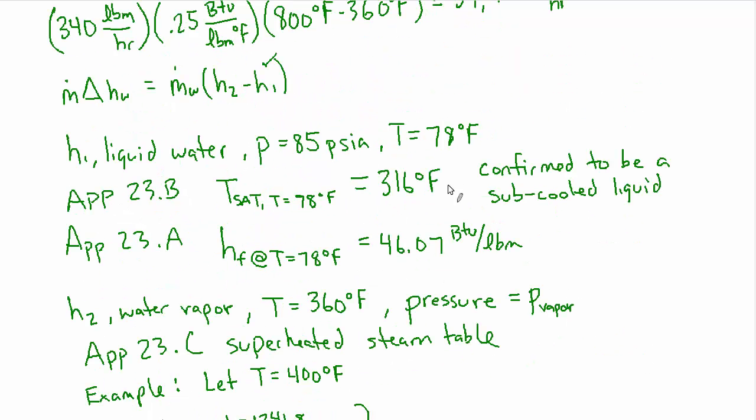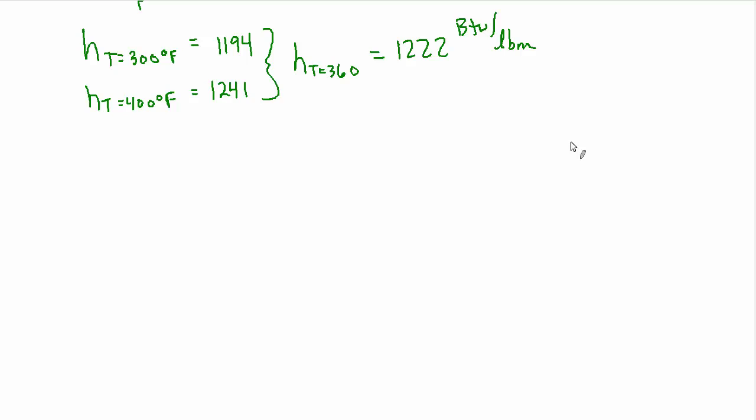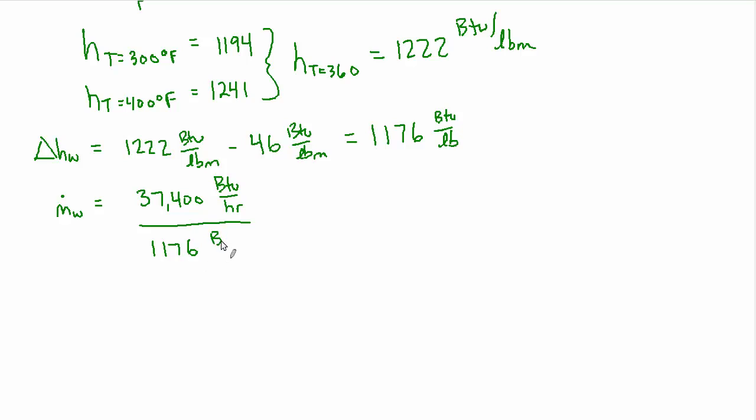Okay, so now we can come back up to our main equation here, M delta H, which we were going to set equal to 37,400. So let's pick it up with delta H. We now know delta H for water equals that 1222 that we just found minus the 46 from the liquid water, which is about 1176 BTU per pound. And now we can solve for the mass flow rate of water, which is the total energy from the left side of the equation, which we had as 37,400 BTU per hour divided by our delta H 1176 BTU per pound mass, which gives us a mass flow rate for the water of 31.8 pounds per hour. And that is answer A.